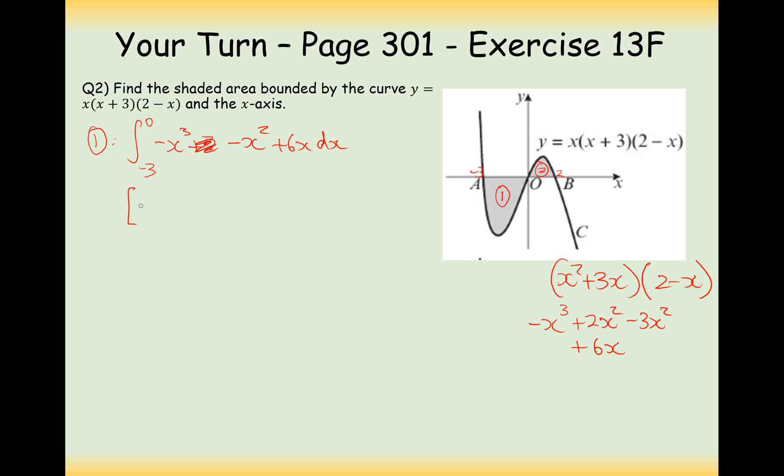So let's integrate it now. So it's going to be minus x to the 4 over 4 minus x to the 3 over 3 plus 3x squared between 0 down to minus 3. Now, in this case here, we're going to substitute in 0, which is going to give us 0. So it's going to be take away, now minus 3 substituted in. So it's going to be 3 times 3 times 3 times 3 divided by 4, which is 81 over 4. So that's minus 81 over 4.